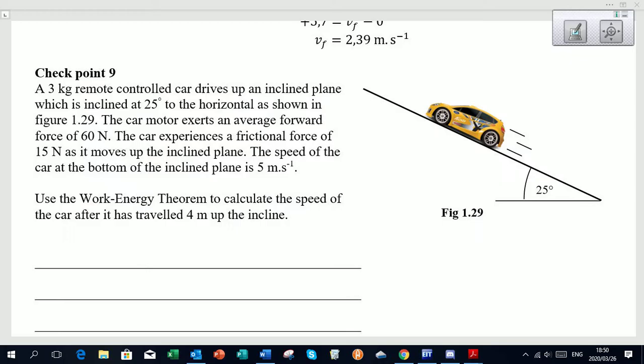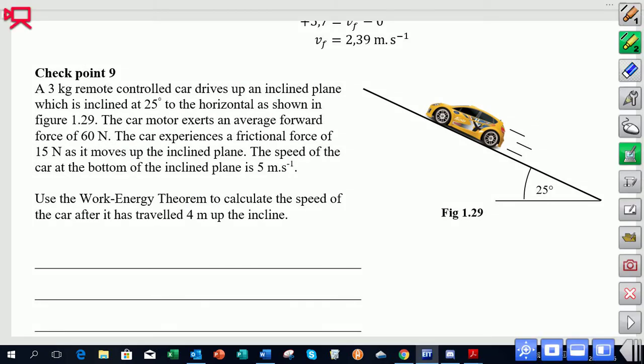There it is, checkpoint 9. Let's identify some of the pieces of information they've given us. It's a 3 kg car and it drives up, so there's a force of the engine at play here, and it's driving up an incline at 25 degrees to the horizontal. The car engine exerts a force of 60 newtons up the slope and there's a frictional force of 15 newtons that's obviously going to oppose the motion. The speed of the car we are told is 5 meters per second as it enters the inclined plane.